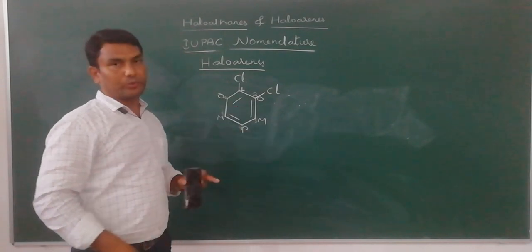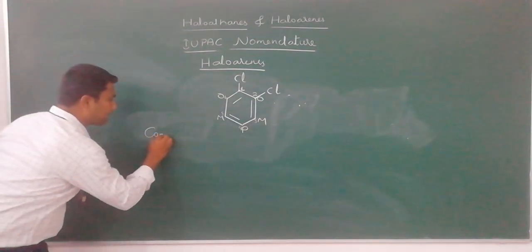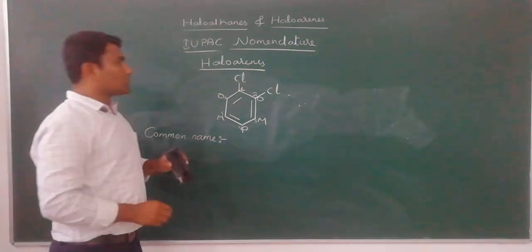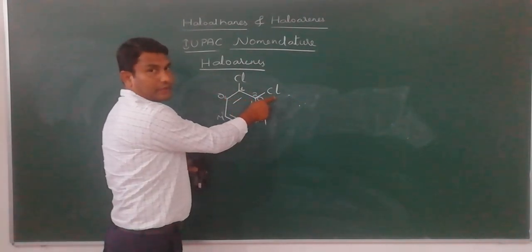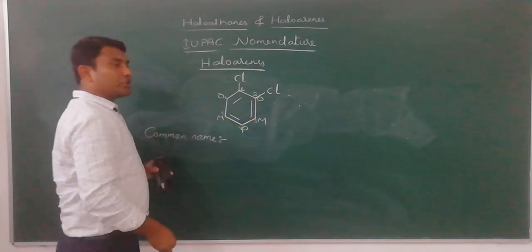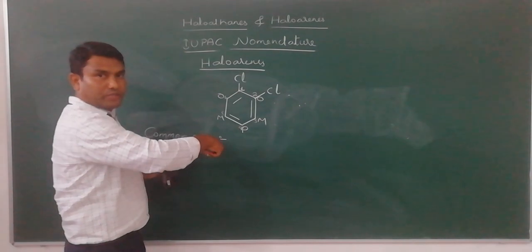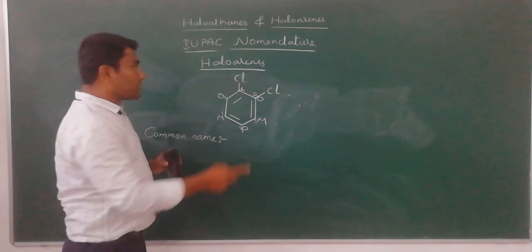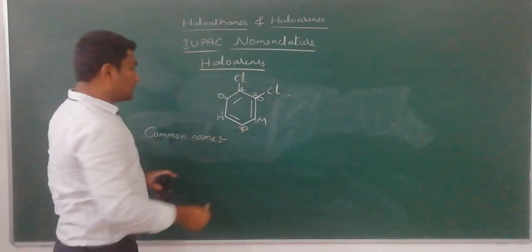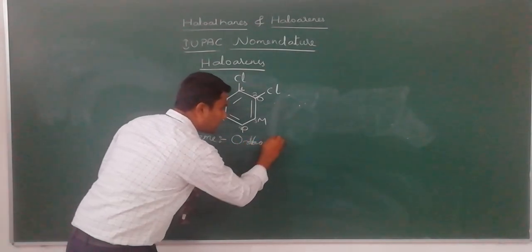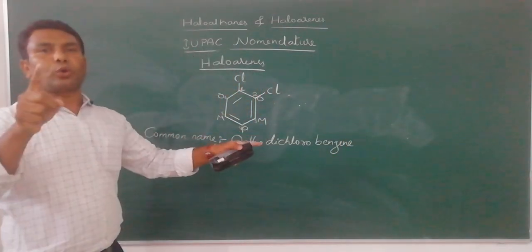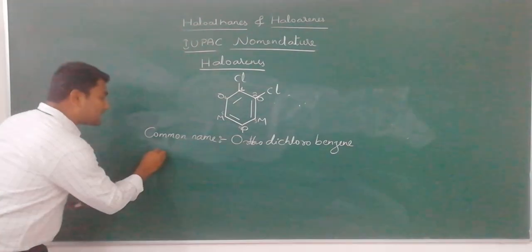Now we have to name this compound. The second chlorine is in the ortho-position to the first chlorine atom. We have two chlorine atoms, therefore it is dichloro. The common name of this compound is ortho-dichlorobenzene. The IUPAC name is not the same as the common name.